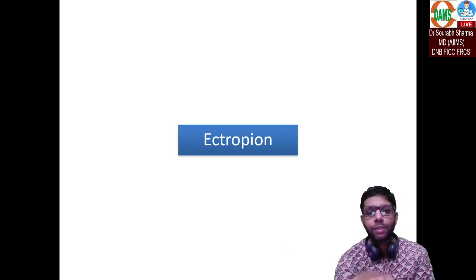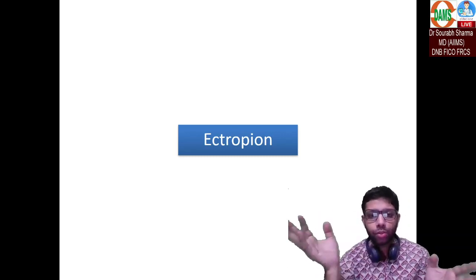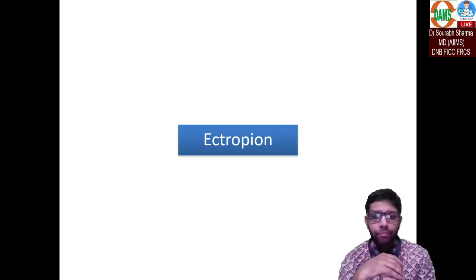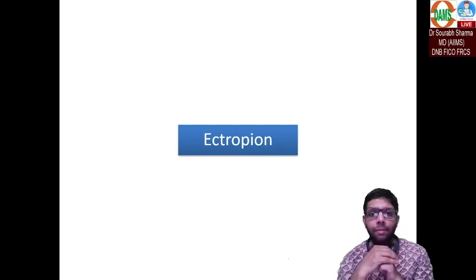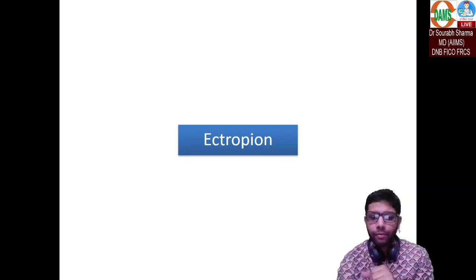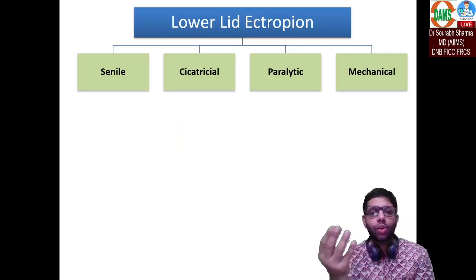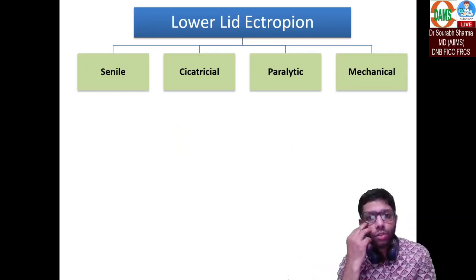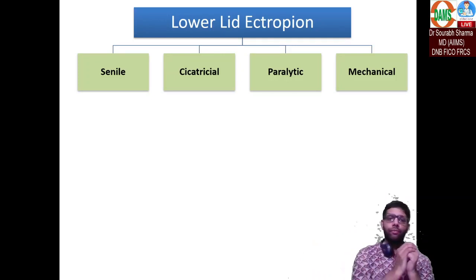The most common cause of ectropion is senile, that is old age — involutional or senile. For lower lid ectropion, it can be caused by a burn of the eyelid skin, which causes contraction and turns the eyelid outside — that is cicatricial. If there is a tumor mass it will pull the eyelid outwards — that is mechanical. Or paralysis of the orbicularis due to seventh nerve palsy will also lead to lower lid ectropion.